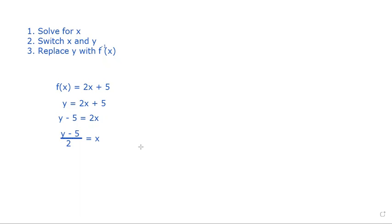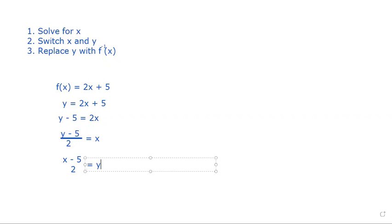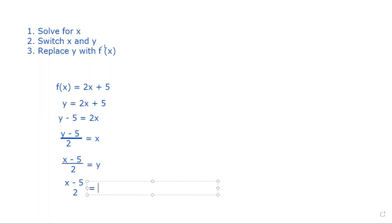Now that (y minus 5) over 2 equals x, we do what we said we'd do earlier — we switch our x's and y's. So now we have (x minus 5) divided by 2 equals y. Going to step three, that means (x minus 5) over 2 equals f-inverse of x.